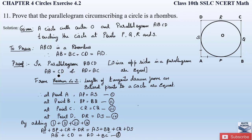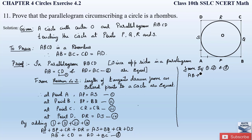From equation 1 we have AB = CD, and from equation 2 we have AD = BC. Substituting into equation 3: AB + AB = BC + BC, which gives 2AB = 2BC. Cancelling 2 from both sides, we get AB = BC. Let this be equation 4.